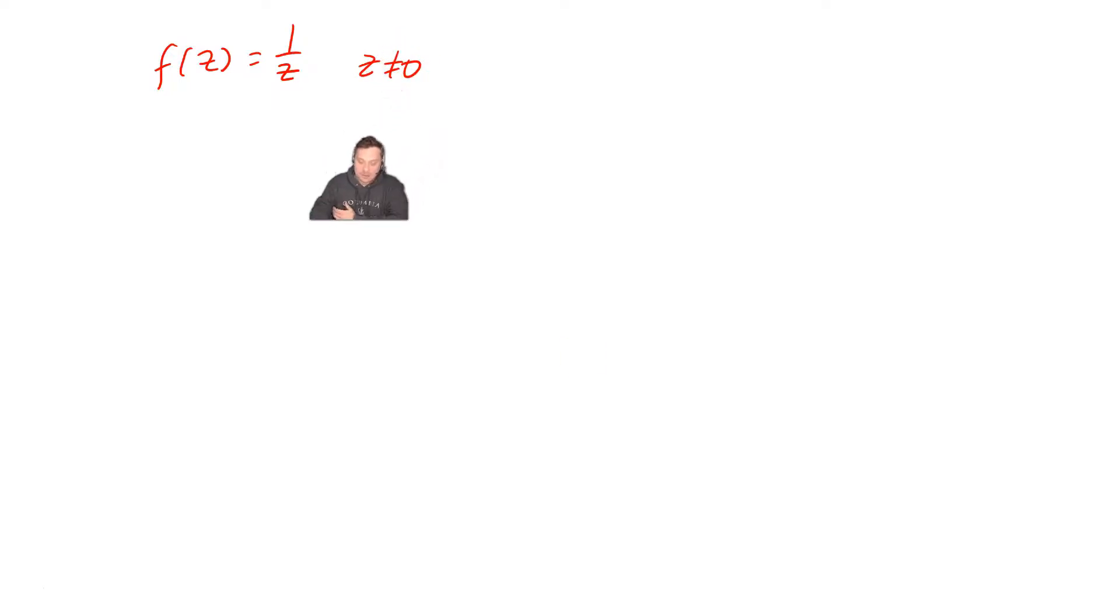What does that mean? Well, we write z as x + iy. Remember, we're in complex functions here. That cannot be equal to 0.